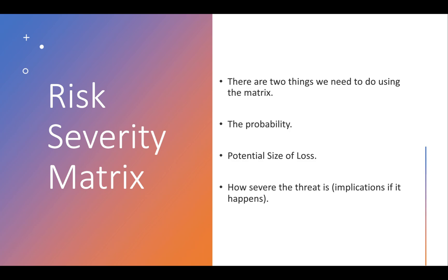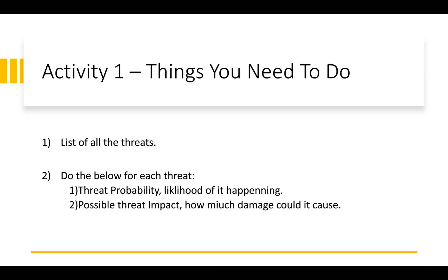There are actually three things we need to do using the matrix: first, the probability — how likely is it that this weakness or fault will occur; second, the potential size of loss — if it does happen, how much loss could the company face; and third, the risk severity — how bad will the implications be for the company if it actually happens. So list all the threats and do this assessment for each one.